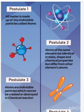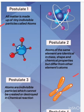Dalton's atomic theory comprises five parts. Number one: all material is made up of tiny small particles called atoms. Number two: atoms of the same element are identical in size, shape, and chemical properties, but different from atoms of other elements. Number three: atoms are individual, indivisible particles which cannot be created or destroyed in a chemical reaction.